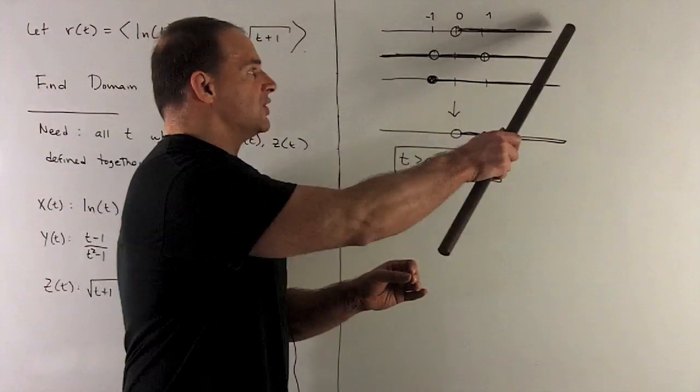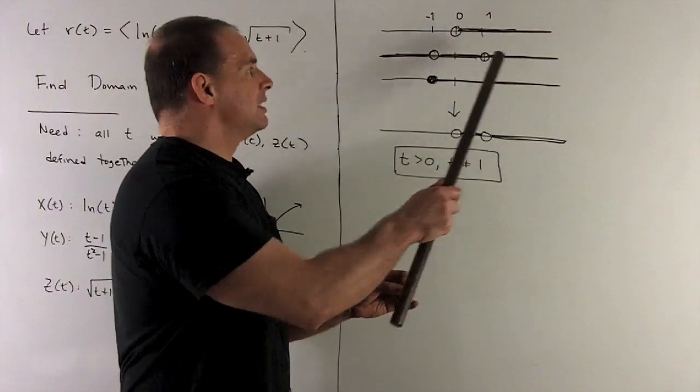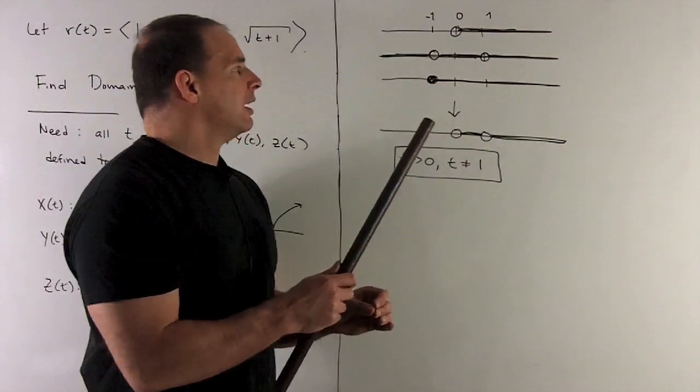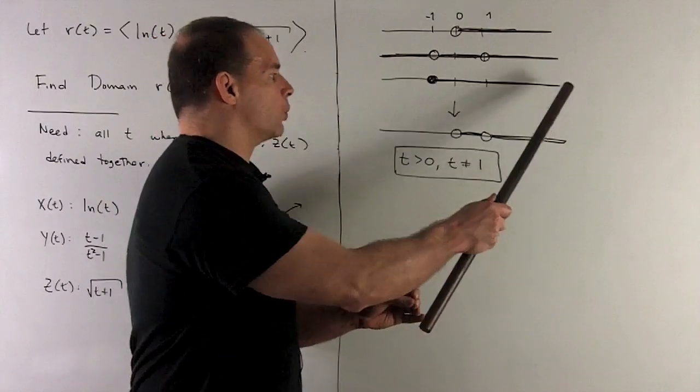So first one, t greater than 0. Second one, t not equal to minus 1 or 1. And then third one, t greater than or equal to minus 1.